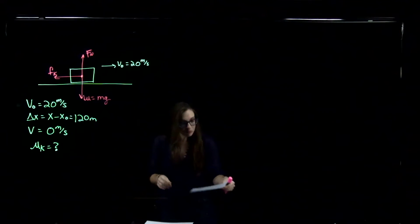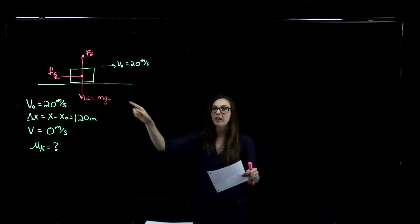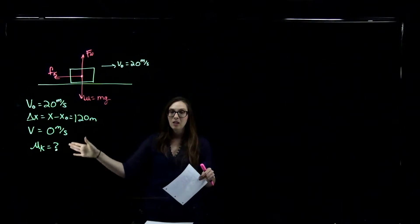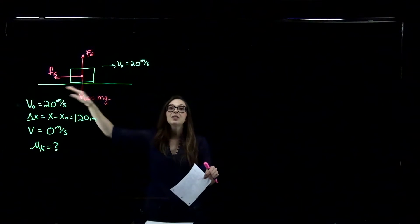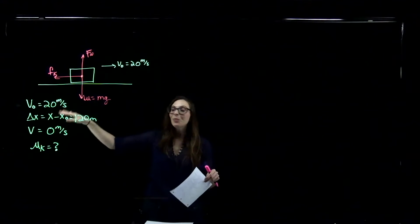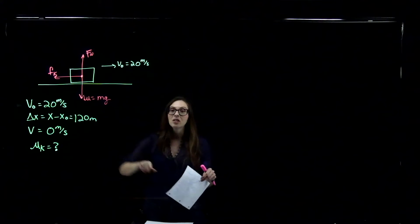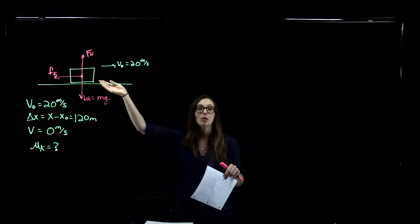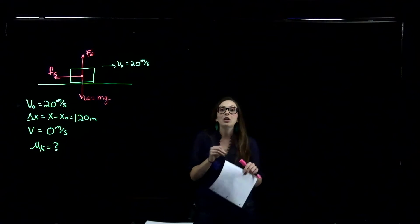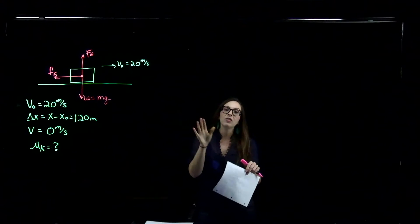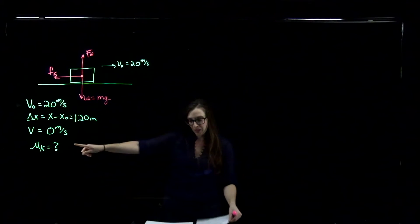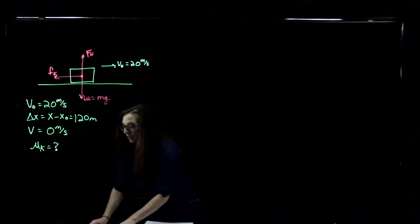To solve this problem, we're given an initial velocity, a final velocity, and a distance over which we travel, and we need to find the coefficient of kinetic friction. This sounds like our kinematic equations, so we're going to use kinematics to solve for the acceleration of the puck across the pond, and then use that acceleration in F = ma to find the coefficient of kinetic friction.